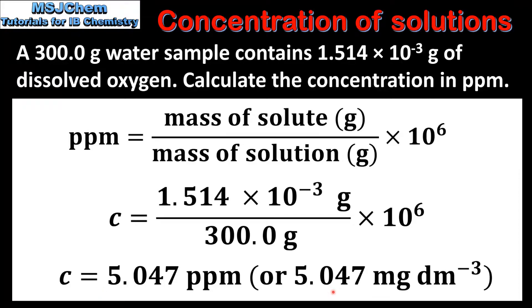1 ppm is equal to 1 milligram per cubic decimeter, so we can also give the answer as 5.047 milligrams per cubic decimeter.